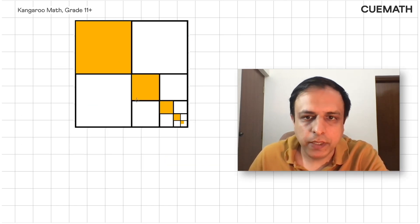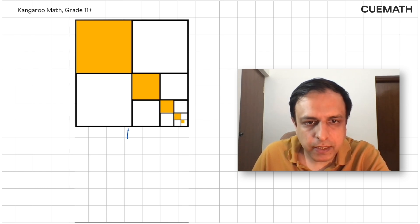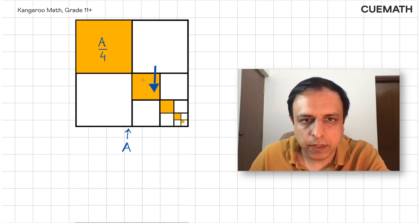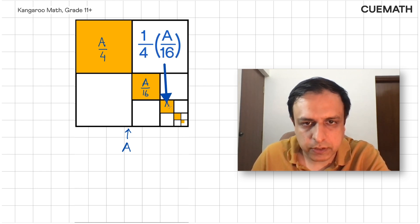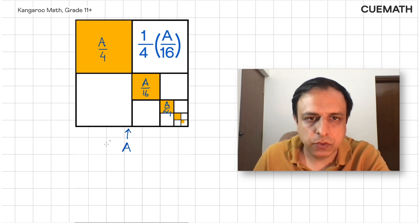Let's observe the large square carefully. If the large square has an area of A, then this first yellow square has an area of A by four. The second yellow square is one-fourth of A by four, so its area will be A by 16. This third yellow square will have an area that's one-fourth of A by 16, so this will be A by 64 and so on.